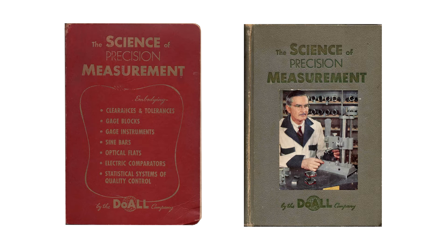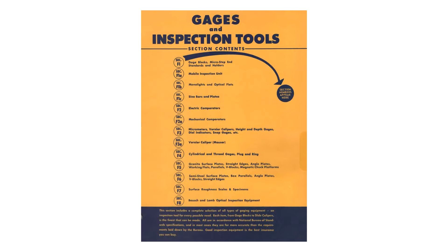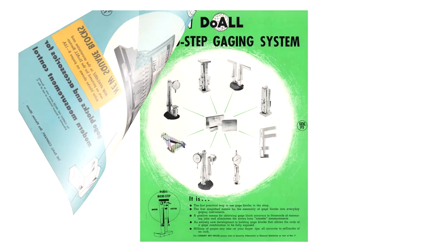My primary reference for the interpretation of fringe patterns is a Duell book from the 1950s titled The Science of Precision Measurement. There are two editions of this book with some content variation, but either edition is very helpful.